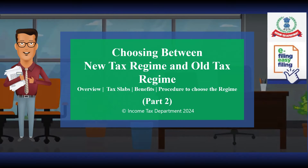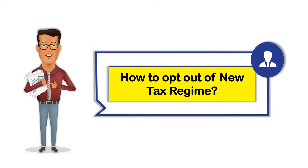This video is on choosing between the new tax regime and old tax regime. The video is divided into three parts. The first part covers an overview of the two schemes and tax slabs. The second part covers the procedure for opting out of the new tax regime. The third part covers frequently asked questions. This video covers Part 2 of the series.